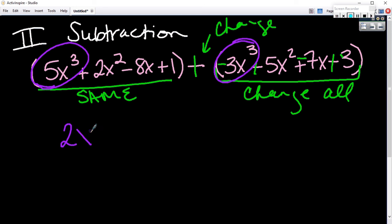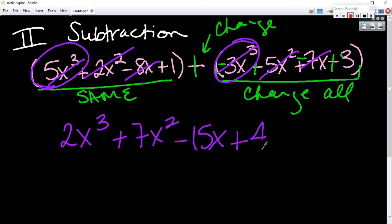2x cubed. So I'm done with the cubes. How about powers of 2? 7x squared. How about x's? Negative 15x. 1 and 3 is 4. All right. Y'all ready to move on to multiplication? A little bit harder.